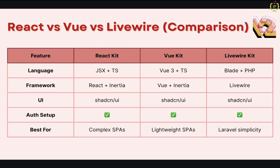Let's do a quick side-by-side comparison to help you decide which one fits your needs. React and Vue use Inertia.js to create single-page applications using Laravel routing, while Livewire sticks with Blade templates and PHP syntax. All three come with authentication and the same UI library. The React kit is perfect if you love JavaScript and want to build rich user interface applications or integrate with APIs. The Vue kit is ideal if you prefer a lighter learning curve but still want a modern single-page application feel. The Livewire starter kit is great for those who want to stay in Laravel's ecosystem, avoid too much JavaScript, and still build interactive applications.